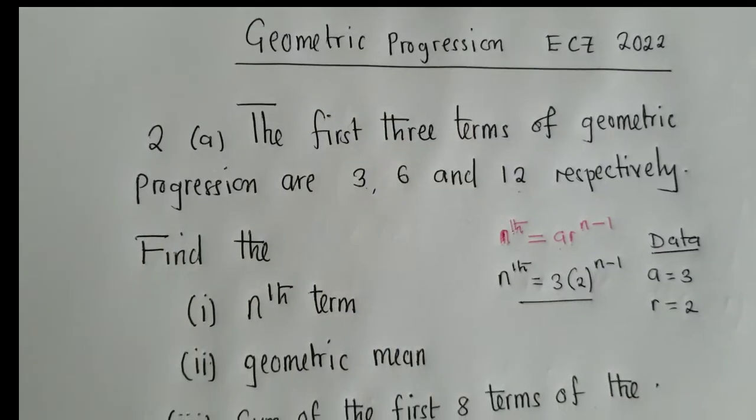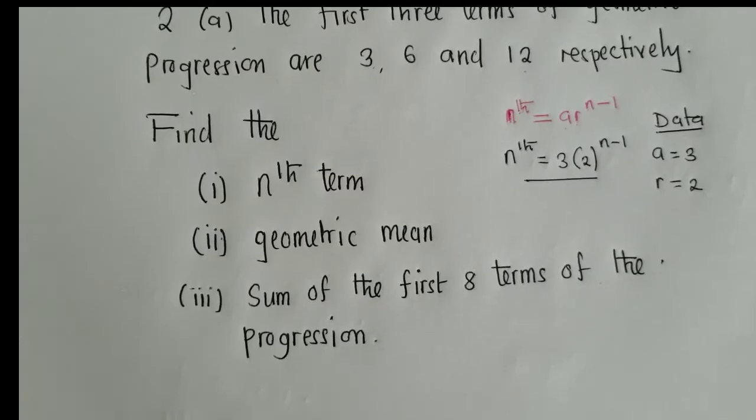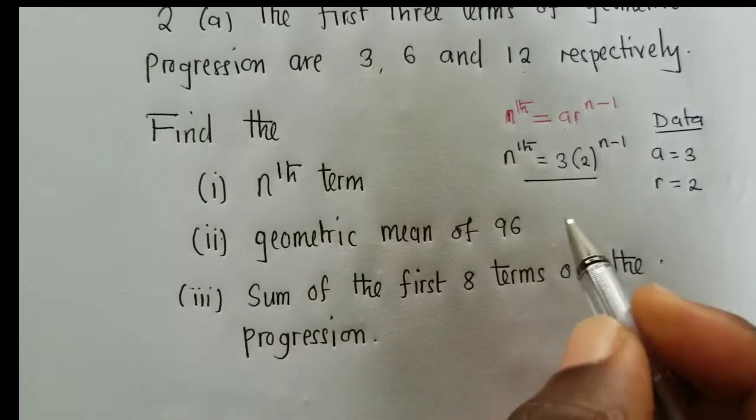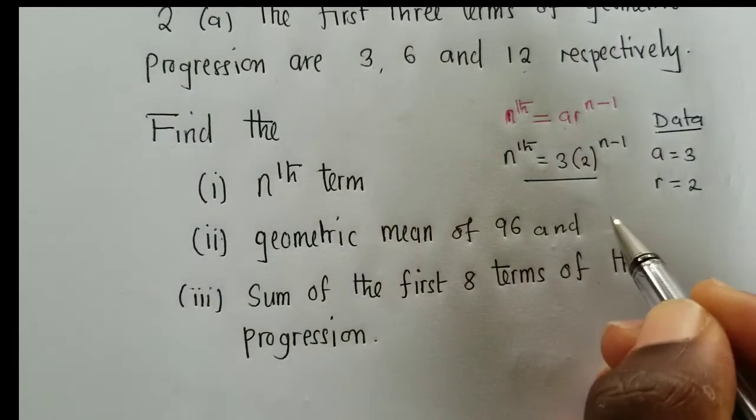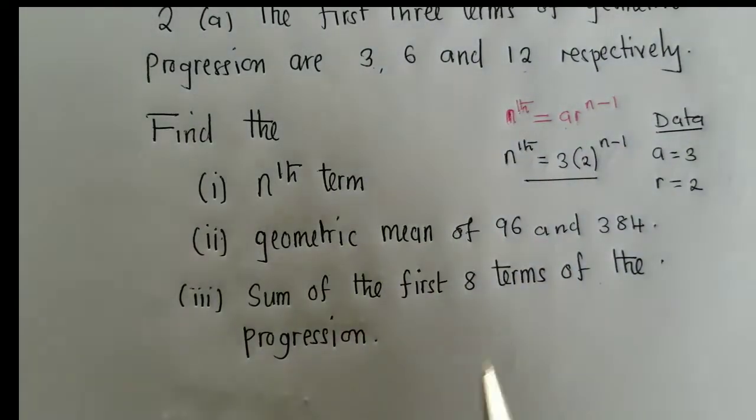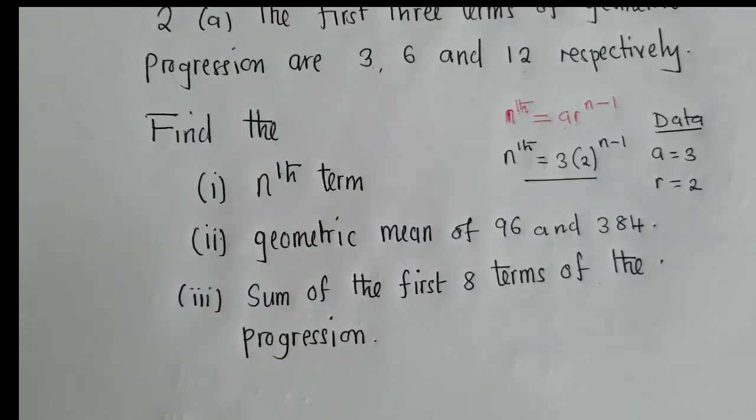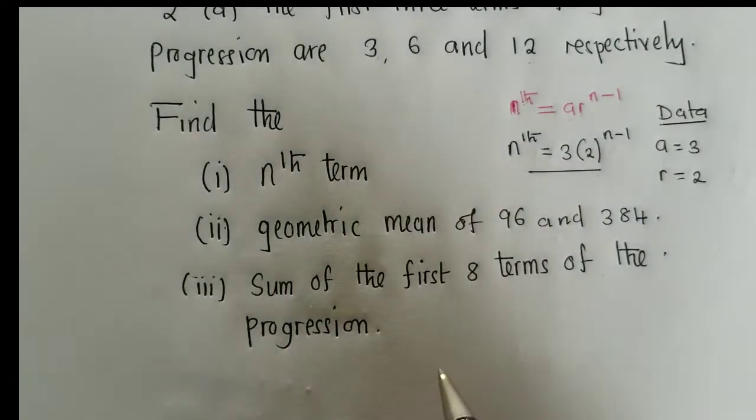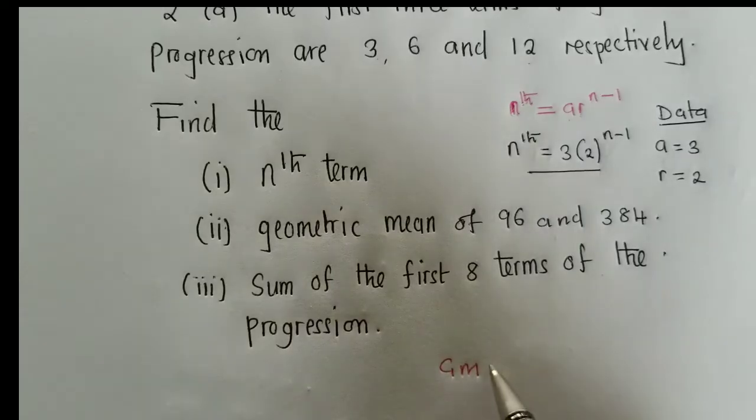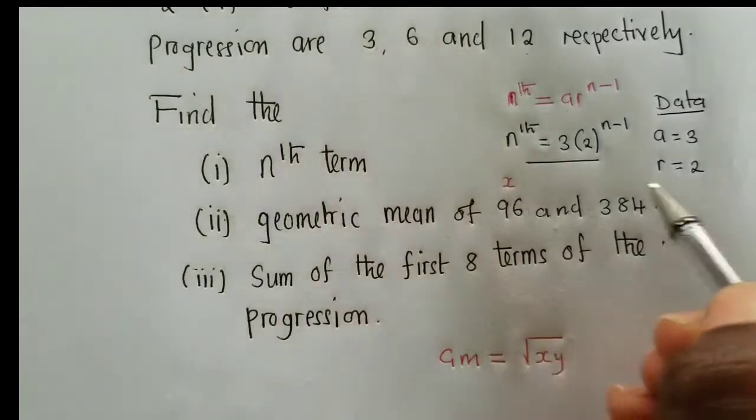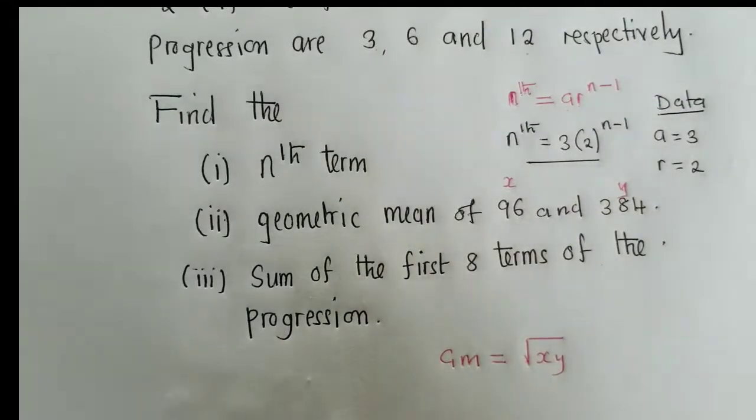So for question 2, for the geometric mean, they've given us 96 and 384. So they wanted us to find the geometric mean of 96 and 384. The formula to use here is geometric mean equals square root of x multiplied by y. So this would be my x and this would be my y. When you multiply them, you find the square root.